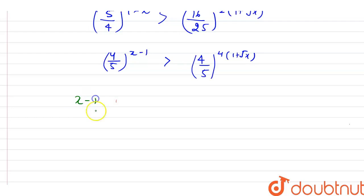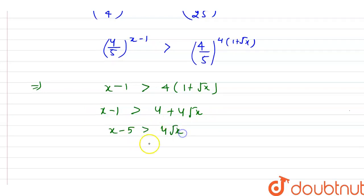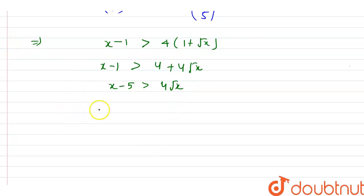The bases are now the same, so we can compare the powers directly. This gives x minus 1 greater than 4(1 plus root x). Expanding: x minus 1 greater than 4 plus 4 root x. Subtracting 4 from both sides: x minus 5 greater than 4 root x. Dividing both sides by 4: (x minus 5) over 4 is greater than root x.